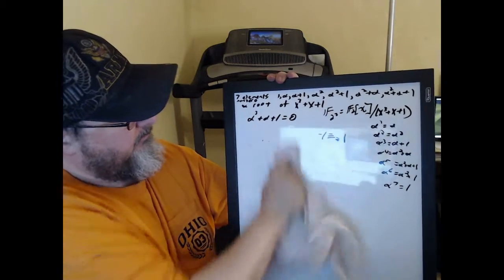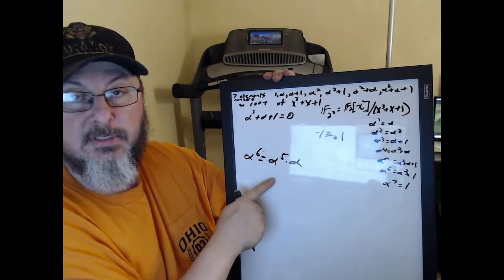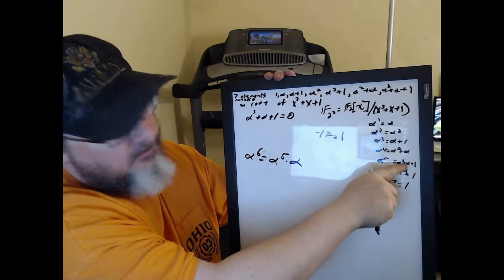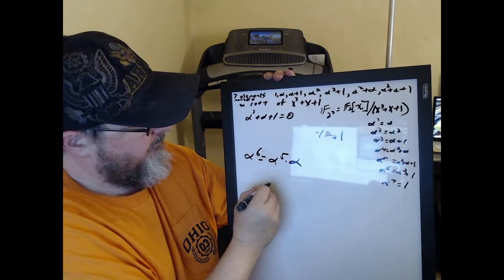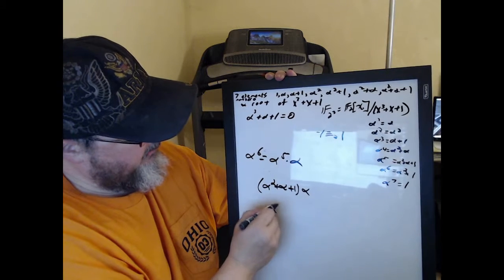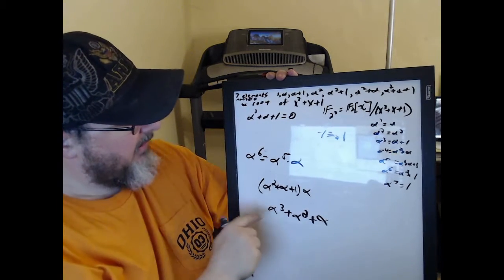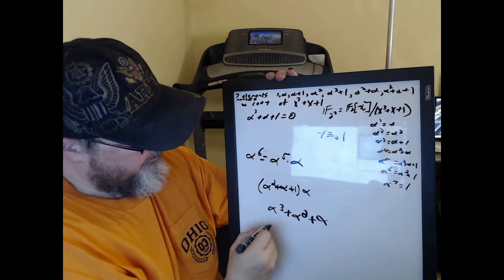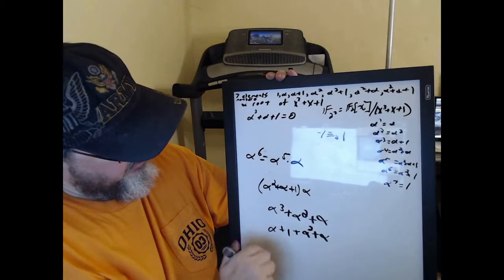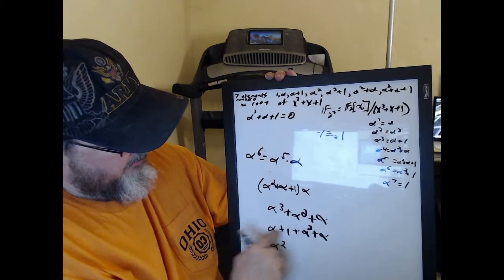Let's get alpha to the sixth. Alpha to the sixth is alpha to the fifth times alpha. Alpha to the fifth is alpha squared plus alpha plus 1, times alpha. Distribute that: that's alpha to the third plus alpha squared plus alpha. Now alpha to the third is alpha plus 1.